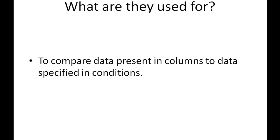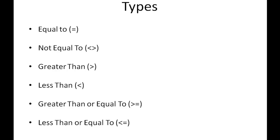Let's check out what options we have in SQL. We've got the equal-to operator, which is the single equal-to sign — you use this to check whether data in columns is the same as what you specify in your WHERE condition. Then you've got the not-equal-to operator, the greater-than operator, and the less-than operator. You also have greater-than-or-equal-to and less-than-or-equal-to, and they're both self-explanatory.